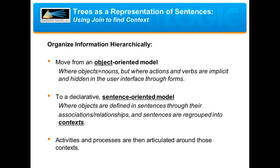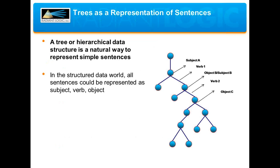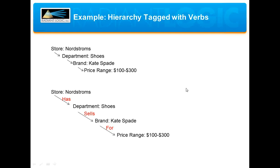The best way to organize this information so it can be understood by a computer is hierarchically. By doing this, we can move from an object-oriented model — where actions and verbs are implicit and hidden in the user interface — to a sentence-oriented model where objects are represented as sentences through their relationships with other objects. For example, a typical hierarchy could show the various departments and brands that make up Nordstrom. By tagging the links between each object with a verb, we can see the complete picture: 'Nordstrom has department shoes, which sells the brand Kate Spade for a price range of between $100 and $300.' Knowing attributes such as brand, price, and color could be used to suggest products to a consumer as a personalized service.